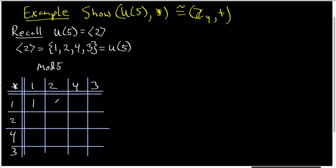So 1 times 1 is 1, 1 times 2 is 2, 1 times 4 is 4, 1 times 3 is 3. I know that multiplication mod 5 is commutative, so once I have a row, I can simply copy it down for the corresponding column. So this column looks like that.